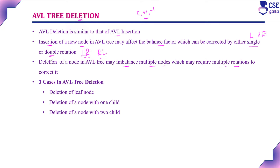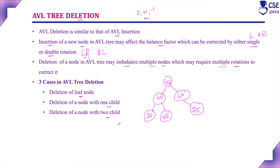There are three cases in AVL tree deletion. First: deleting a leaf node. Second: deleting a node with one child. Third: deleting a node with two children.